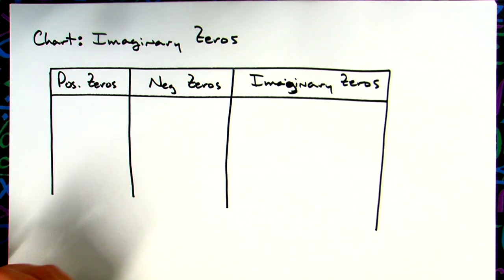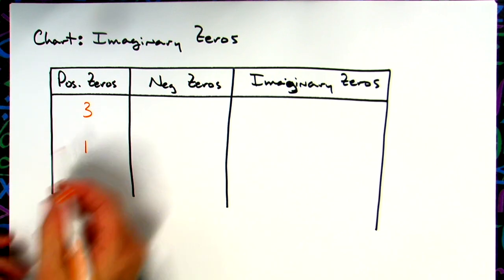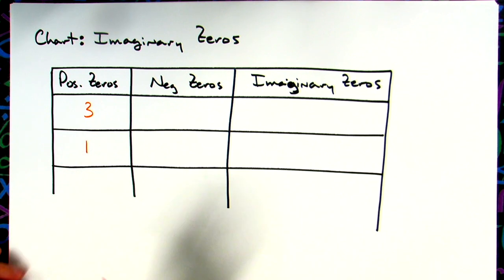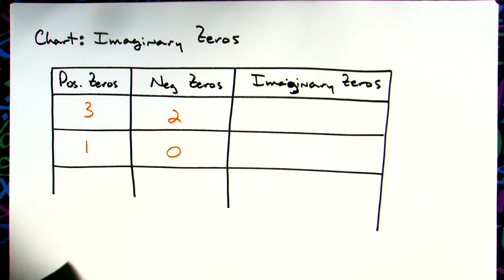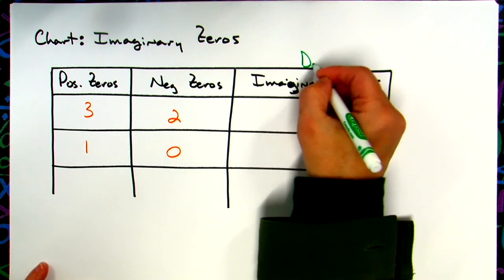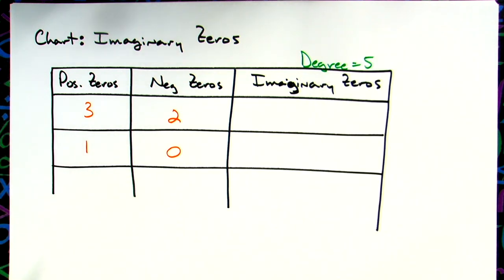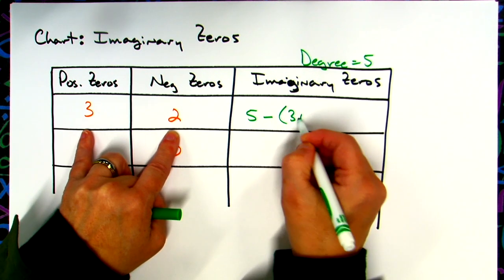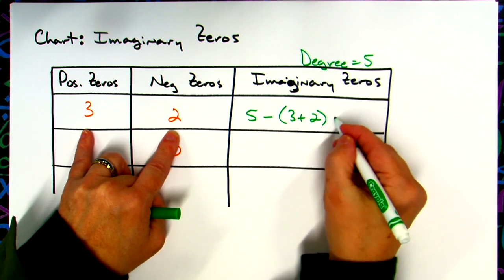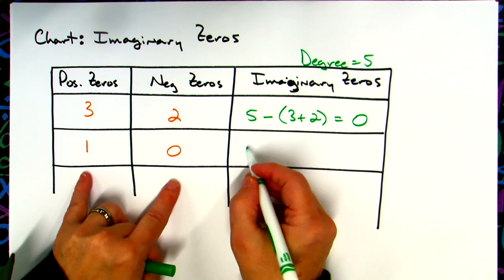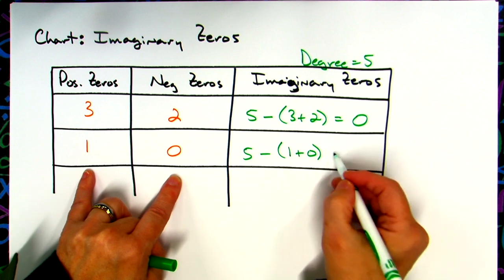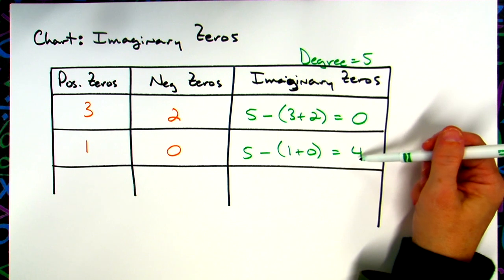We had three or one positive zeros, so I'll put three or one across the rows. For negative zeros, we found two or zero. The degree from the previous work was five. Now I'm going to take degree five and subtract the sum of the positive and negative zeros. Three plus two is five, and five minus five is zero — so zero imaginary zeros there. Then for the next row, one plus zero is one, and five minus one gives four imaginary zeros. So I either have zero imaginary zeros or four imaginary zeros.